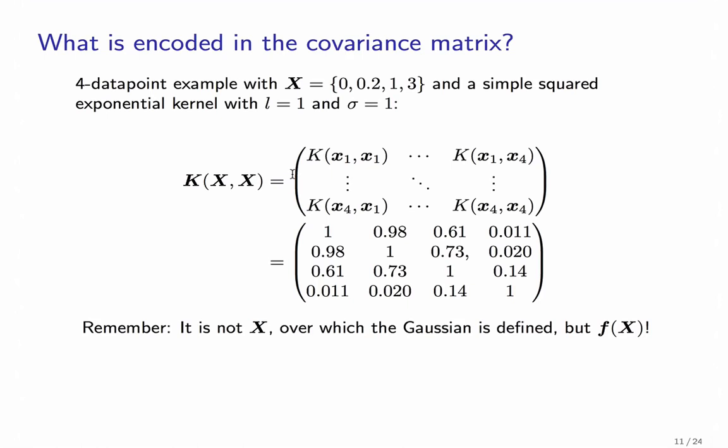Let's take a look at one particular covariance matrix. We have four data points 0, 0.2, 1 and 3. And we use a very simple squared exponential kernel with length scale 1 and output covariance 1 as well. We compute all of the individual kernel values. Then we get this matrix right here.